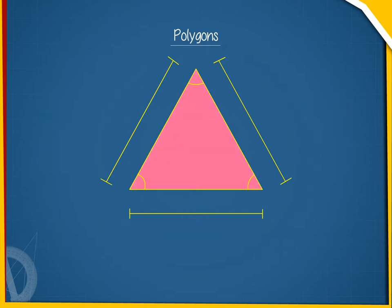A polygon can have n sides and n angles. We classify polygons on the basis of the values of n.